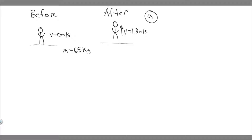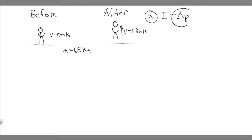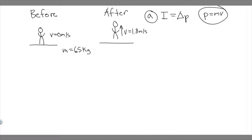For A, we're trying to find the impulse the player experiences. We denote impulse by I. The impulse is equal to the change in momentum — that's what you have to know. And momentum is equal to mass times velocity — that's another formula you have to know.